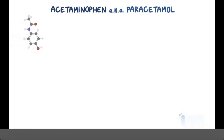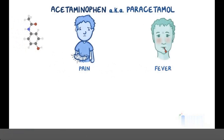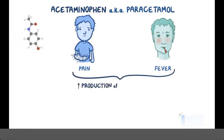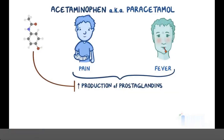Acetaminophen, also known as paracetamol, is mainly used to treat pain and fever. These conditions are related to an increased production of pro-inflammatory chemicals called prostaglandins. Acetaminophen works by decreasing the production of prostaglandins, thereby relieving pain and reducing fever.